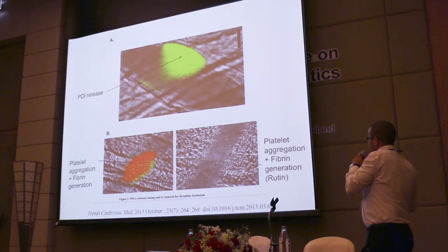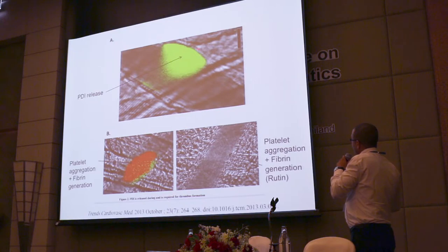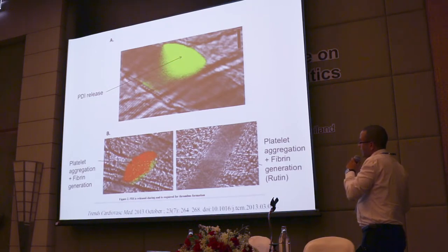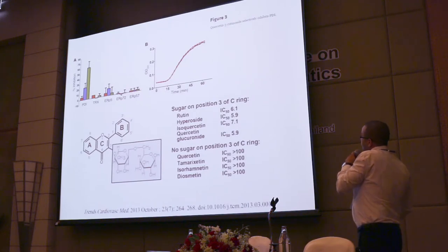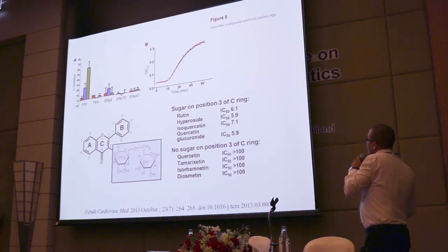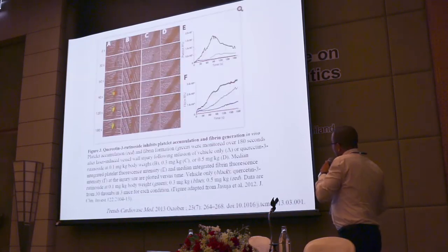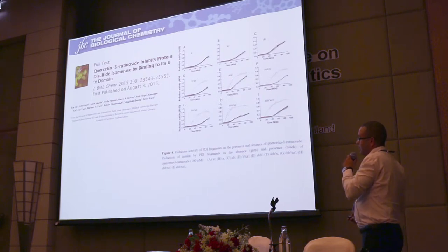PDI is released when there is a blood vessel injury — when provoked by a laser, you can see how PDI is released, followed by fibrin deposition and platelet aggregation. In the presence of rutin, there is no clotting event. Rutin has been discovered as a potential inhibitor of PDI with high specificity to the PDI class of proteins, with activity around 6.1 micromolar. A recent paper in JBC described how rutin binds to PDI, demonstrating interestingly that it does not bind the active site as expected, but rather binds the B'X domain.